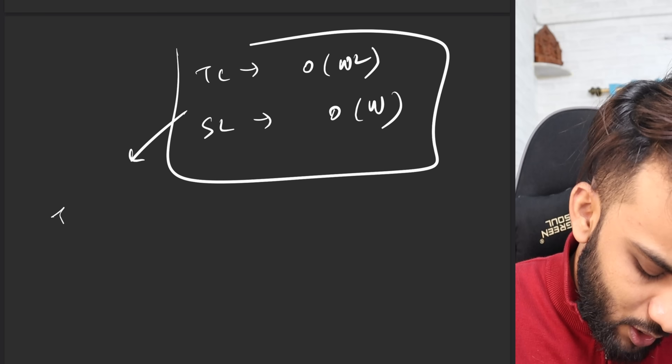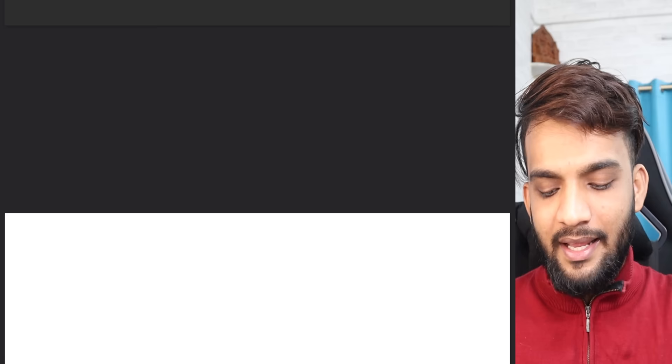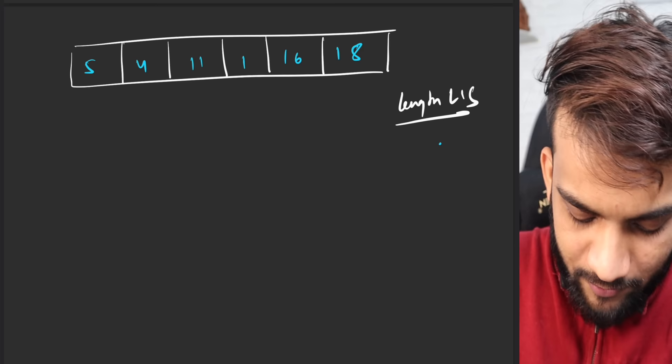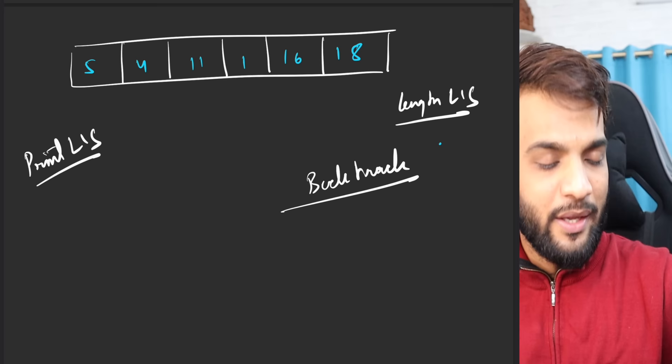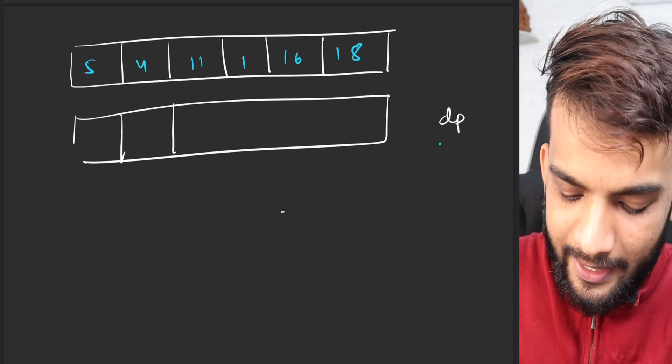This O(n) space solution is required if you want to trace back the LIS — to actually print it, not just find the length. So now let's learn how to print the LIS. We know how to find the length, but what if someone asks us to print the actual subsequence?